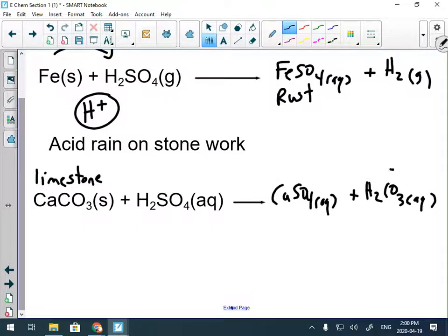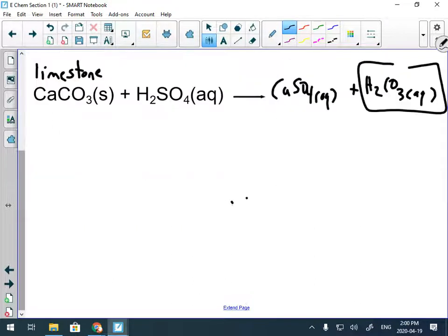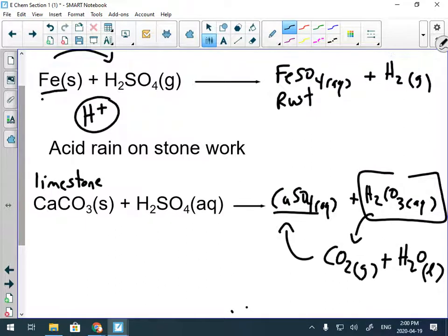And carbonic acid, if you check your data booklet, is actually really unstable and carbonic acid rapidly changes into carbon dioxide and water. And what that does is it bubbles away the calcium sulfate, which we talked about last week or last lesson, which was chalk. So you get limestone getting pitted and you have iron and different types of copper metals getting rusted.